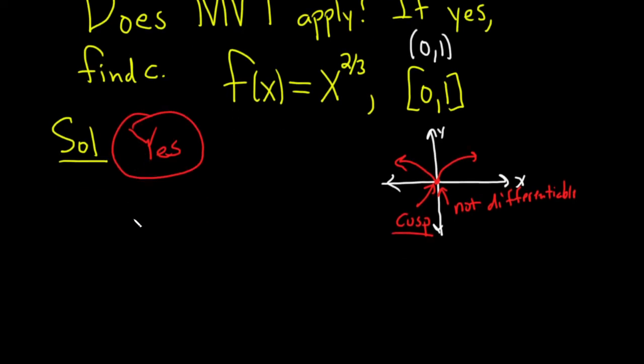The mean value theorem says, if you have those conditions, the continuity on the closed interval and the differentiability on the open interval, there is a value of c that exists inside the open interval, such that the derivative of f at your function at c is equal to f of b minus f of a over b minus a.